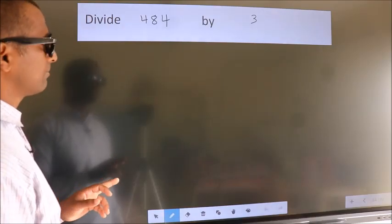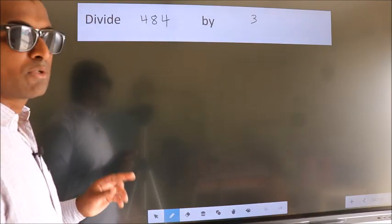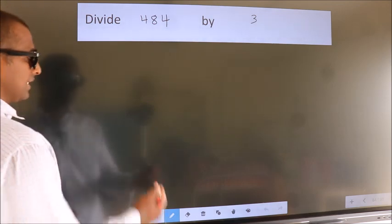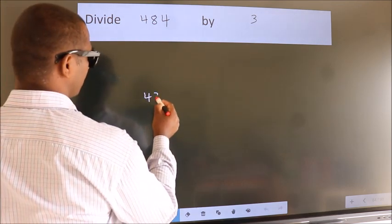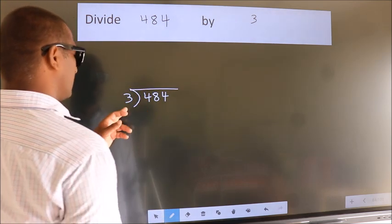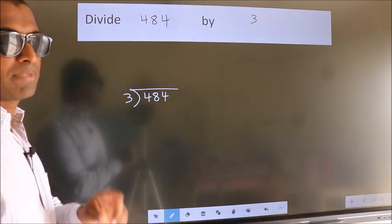Divide 484 by 3. To do this division, we should frame it in this way. 484 here, 3 here. This is your step 1.